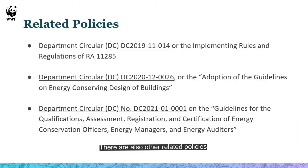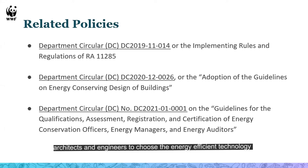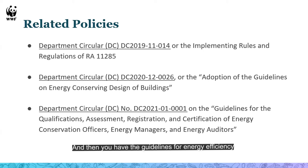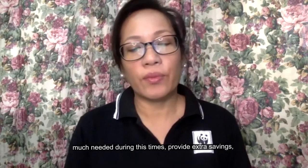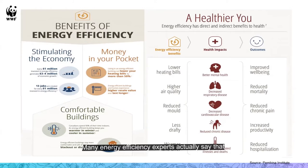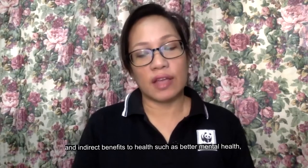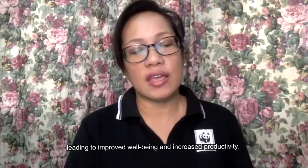There are also other related policies, such as the implementing rules and regulations, and the rules and guidelines for energy conservation design, which will enable building designers, architects, and engineers to choose the appropriate energy efficient technology for building envelopes and electrical and mechanical systems. The law recognizes significant benefits to espousing energy efficiency — it can stimulate the economy, provide extra savings, and create comfortable environments. Energy efficiency experts say it is the 'first fuel,' and it also has direct and indirect benefits to health, such as better mental health and fewer temperature-related illnesses, leading to improved well-being and increased productivity.